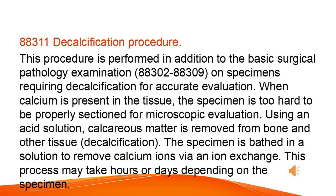Decalcification procedure. This procedure is performed in addition to the basic surgical pathology examination, 88302-88309, on specimens requiring decalcification for accurate evaluation. When calcium is present in the tissue, the specimen is too hard to be properly sectioned for microscopic evaluation. Using an acid solution, calcareous matter is removed from bone and other tissue — decalcification. The specimen is bathed in a solution to remove calcium ions via an ion exchange. This process may take hours or days depending on the specimen.